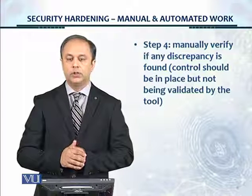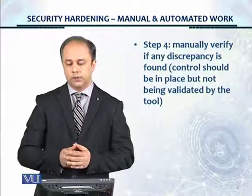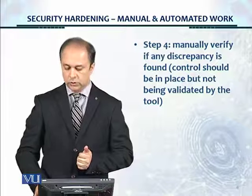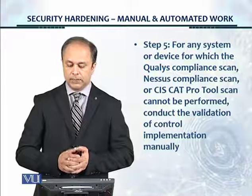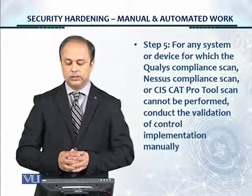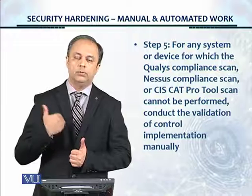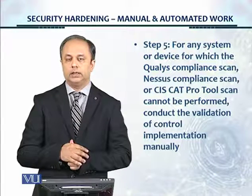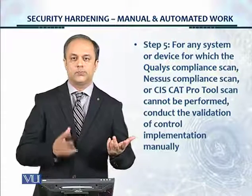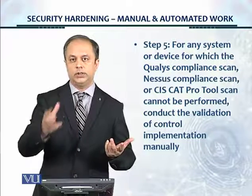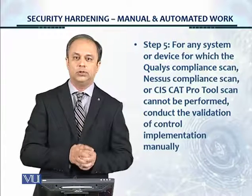Step four: manually verify if any discrepancy is found — for instance, if a control should be in place but is not being validated by the tool. Sometimes there are false negatives or false positives, and you should check these to make sure the tool is not misreporting. Step five: for any system or device for which Qualys, Nessus, or CIS-CAT Pro cannot perform a scan, conduct validation of the control implementation manually, because the scanner is unable to scan that particular asset due to tool limitations.